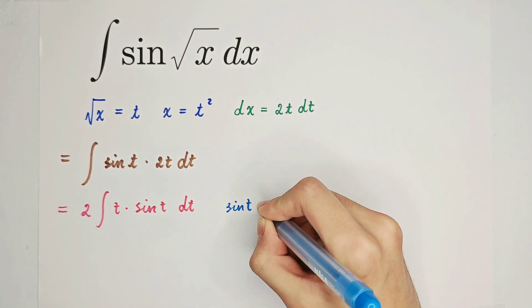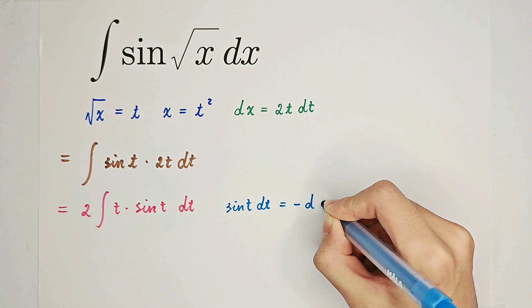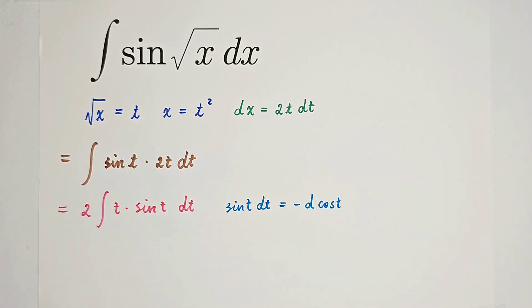Sine t dt is actually negative d cosine of t. So then, it is 2 times the integral of t d cosine of t. And this minus, I will give it to this 2. So it's negative 2 times the integral of t d cosine of t.